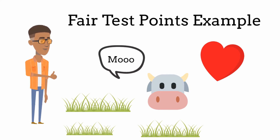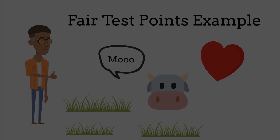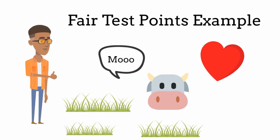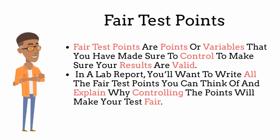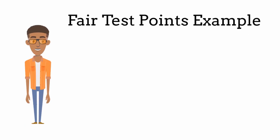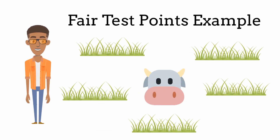In science, we don't want external interference to happen. How would we know if the amount of grass the cow eats is affecting the cow's happiness if we also change the amount of sleep the cow gets? Therefore, every point or variable we are not testing must be controlled — these are known as fair test points. Fair test points are points or variables that you have controlled to make sure your results are valid. When writing fair test points in a lab report, write all the fair test points you can think of and explain why controlling them makes your test fair. In our example, fair test points might include the number of other cows, the age of the cow, or the type of grass the cow gets to eat.